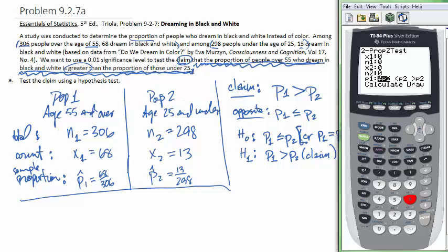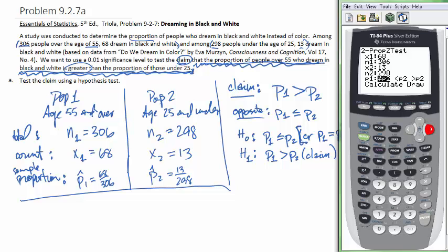The calculator already has fields for X1, N1, X2, N2. Enter X1 = 68 and N1 = 306. For our second population, X2 = 13 and N2 = 298. The last piece of information asks for our alternative hypothesis. We see P1 is bigger than P2, so we're not using the not-equal sign or the less-than sign — we are using the greater-than sign. Select that and arrow down to calculate.